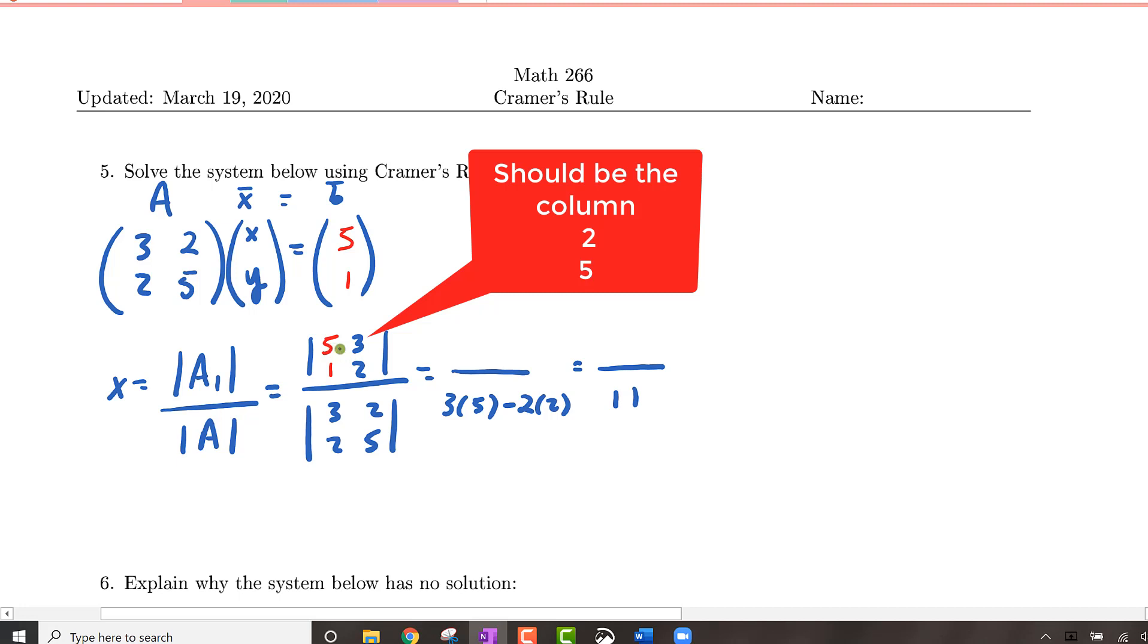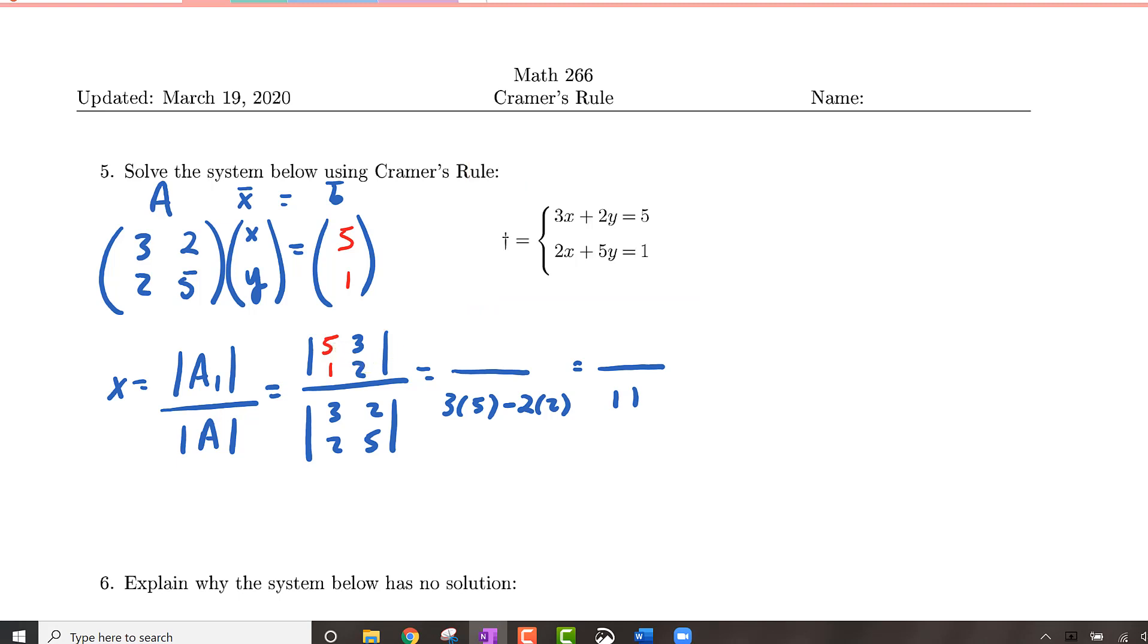In the numerator, we've got a, oops, it looks like I mistranscribed this. This should be the column vector 2, 5. And I simply replace the first column vector 5, 1. So this gives us 5 times 5 minus 2 times 1 which is 25 minus 2 or 23.